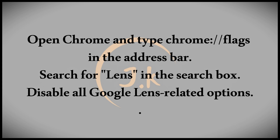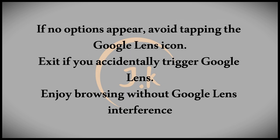Start by typing Chrome flags into the address bar at the top of your browser. Once there, you'll see a new screen. In the search box on this page, type Lens — a list of options related to Google Lens will appear. Disable all of these options by clicking on them and selecting disable.